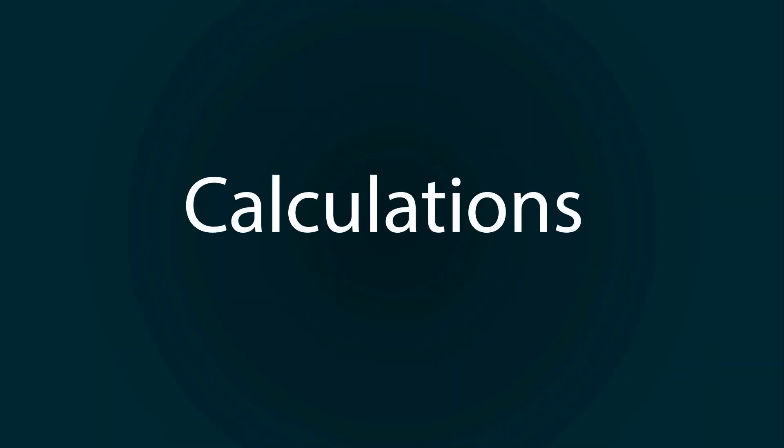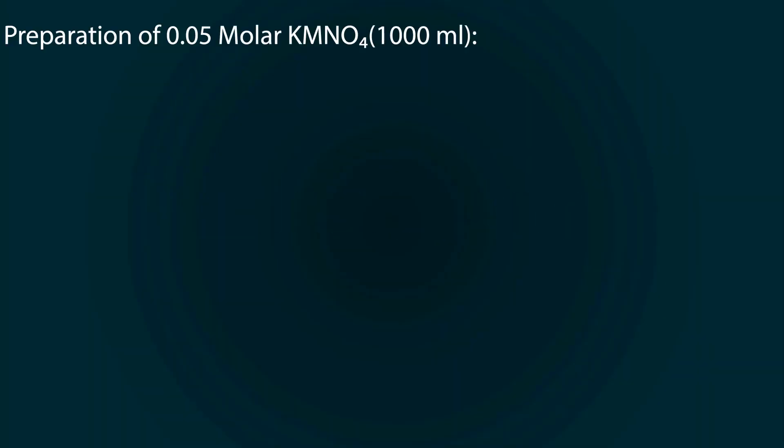Let's do some calculations. Preparation of 0.05 molar potassium permanganate in 1000 milliliters. For this, we have to find the molecular weight of potassium permanganate.